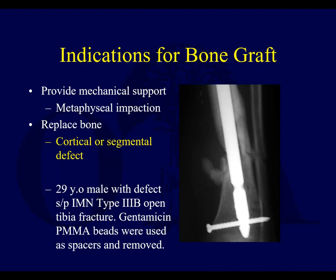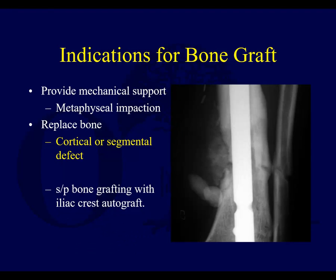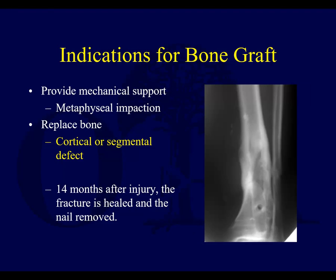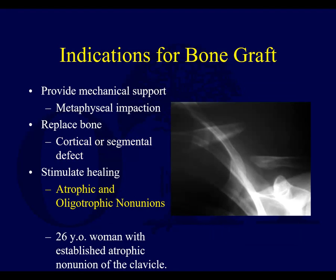Bone graft can also be used to replace bone — for instance, in a cortical or segmental defect. Here's a case with a patient with an open 3B tibia fracture. Antibiotic beads have been used, and you're going to have this defect. This was treated with iliac crest autografting to help the defect heal. You can see after 14 months the fracture is healed and the nail is removed.